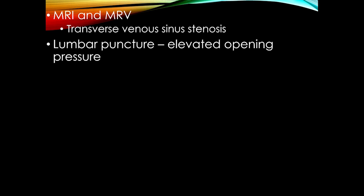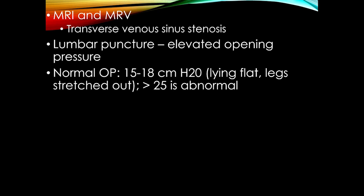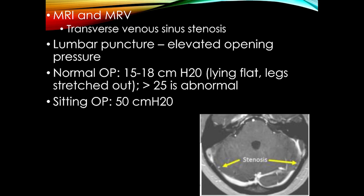A note about lumbar puncture: normal opening pressure is 15 to 18 cm H2O, but that assumes the patient is lying flat with their legs stretched out. More than 25 is abnormal. Position is very important — if someone is sitting, the normal opening pressure is very different. We need the patient lying flat, legs outstretched. Here's an example showing stenosis of the transverse venous sinus, in this case on both sides.